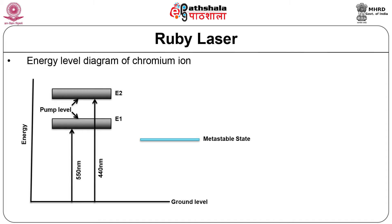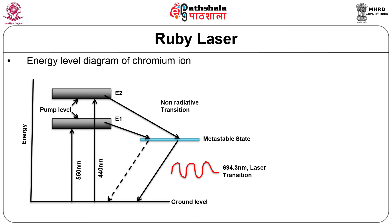Level G is the ground level and E1 and E2 are the pump bands. M is the metastable level, which consists of two closely spaced levels having a lifetime of 3 milliseconds. The lasing transition occurs between M and G levels, giving rise to light of wavelength 694.3 nanometres.